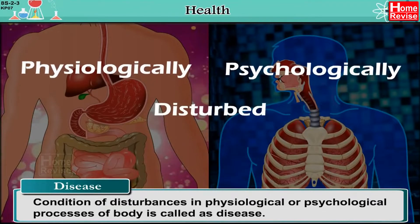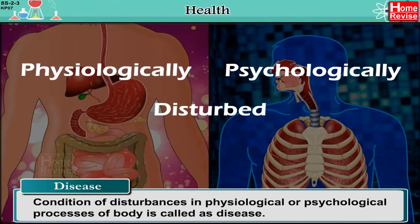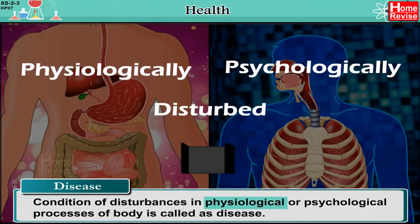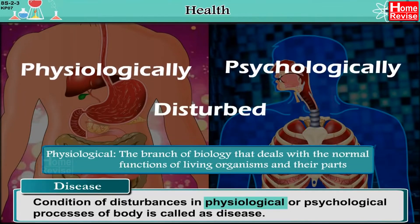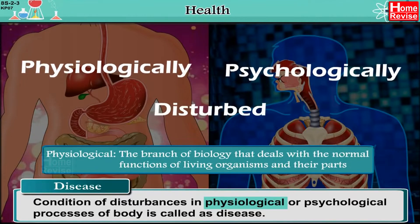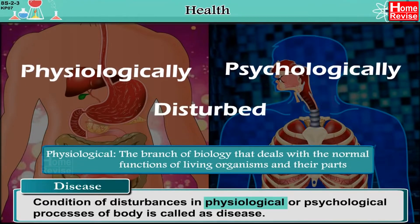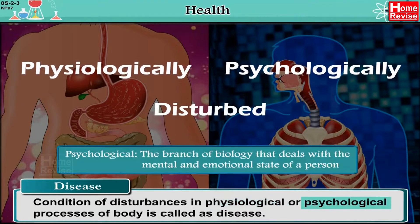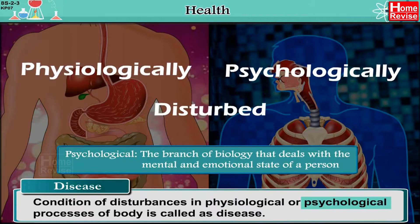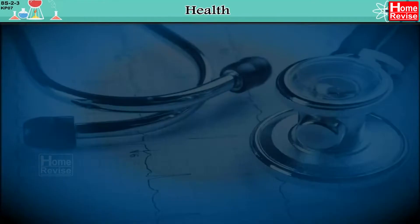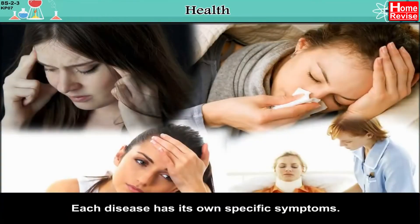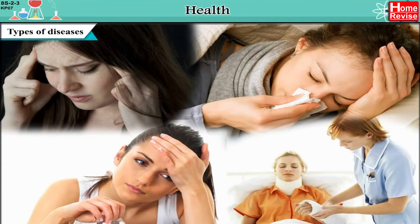Disease is a condition of disturbances in physiological or psychological processes of the body. Physiology is the branch of biology that deals with the normal functions of living organisms and their parts. Psychology is the branch of biology that deals with the mental and emotional state of a person. Each disease has its own specific symptoms.